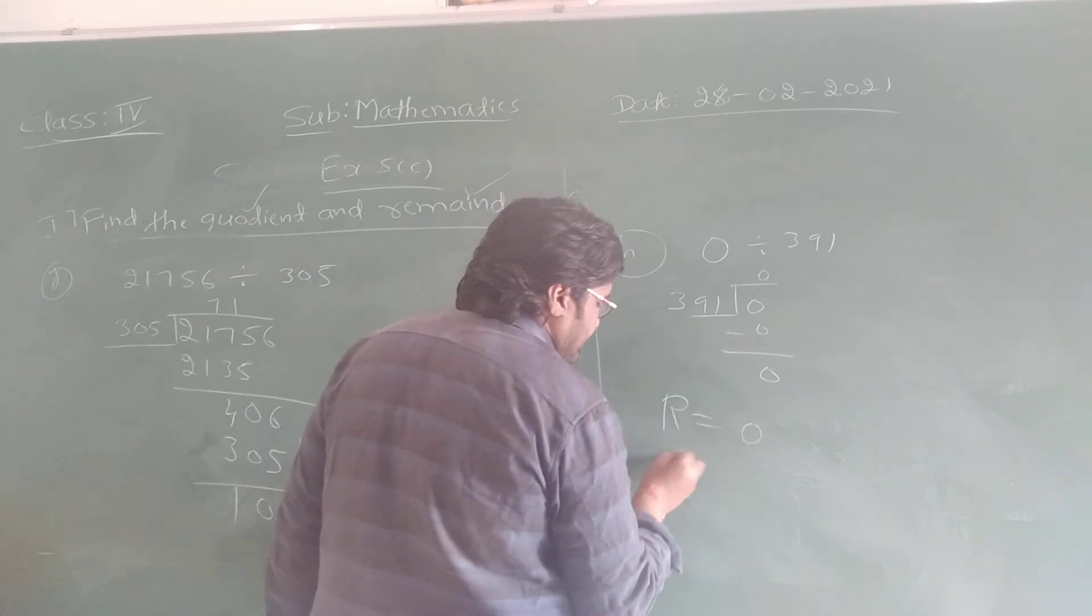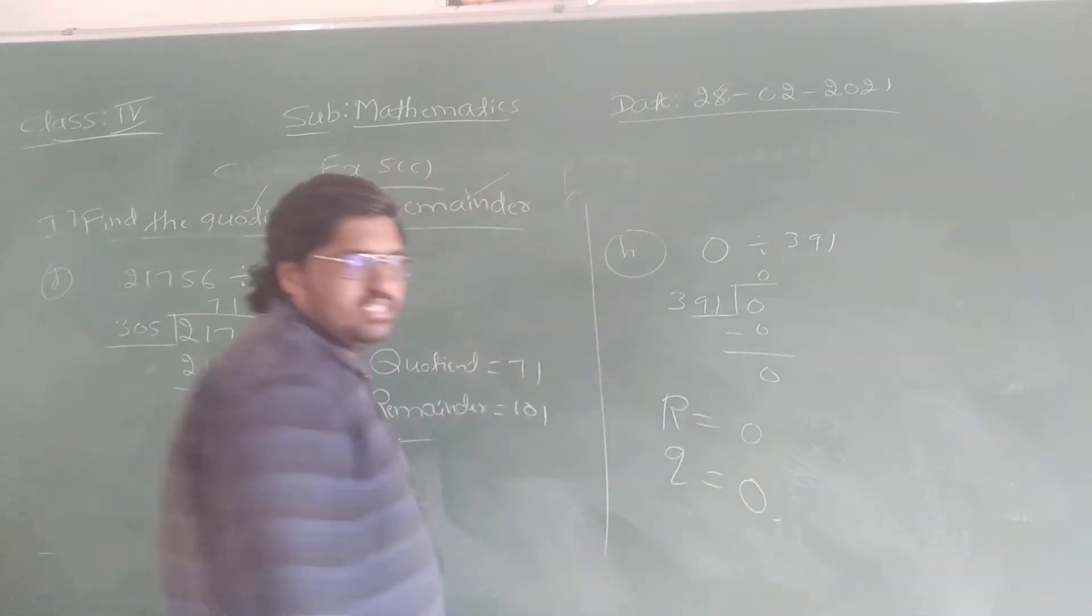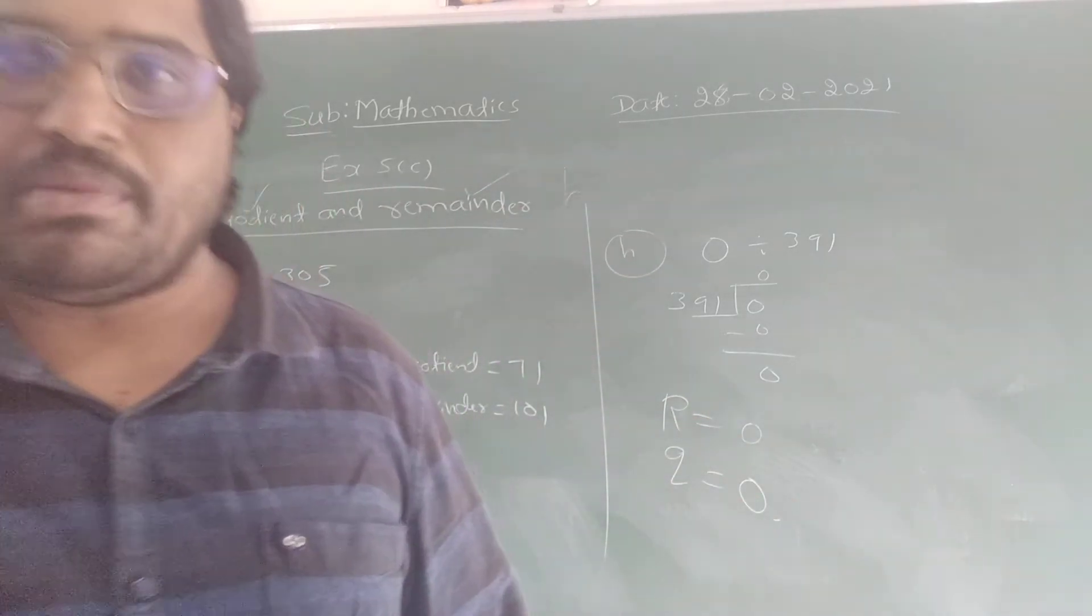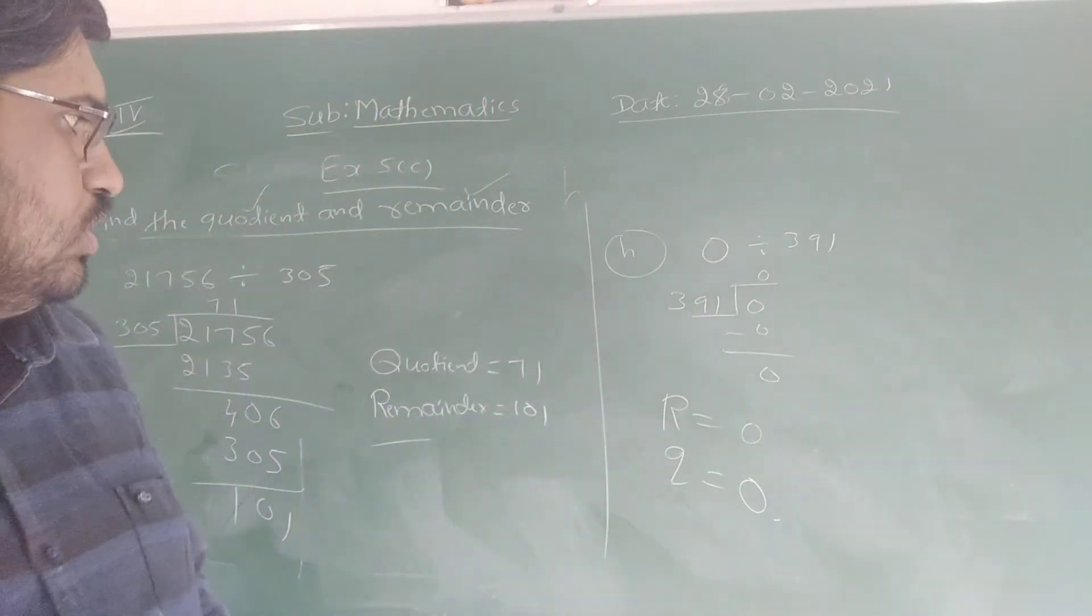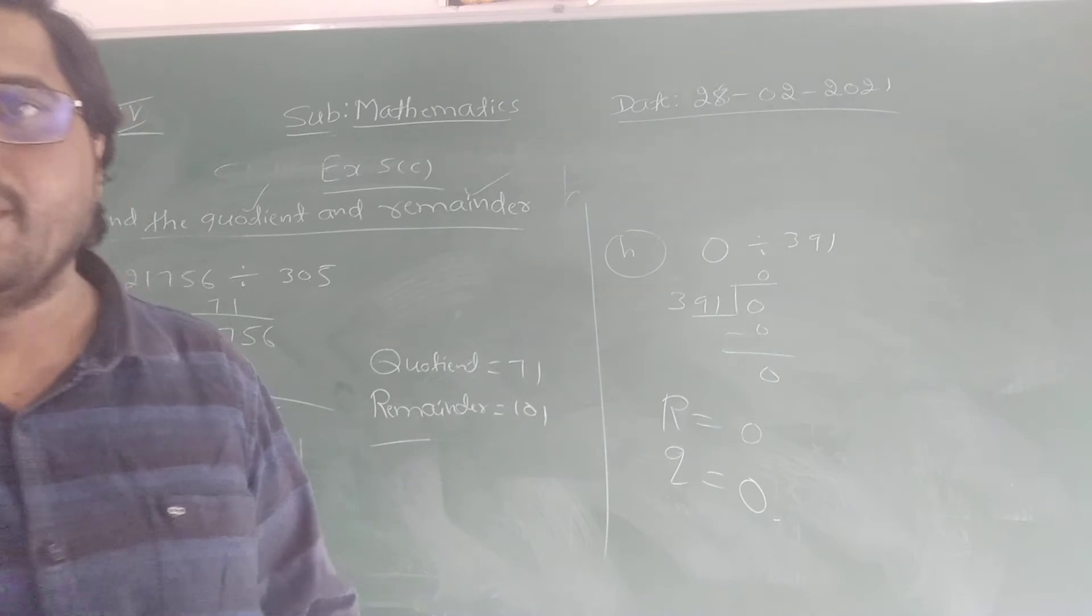So reminder is 0, quotient is 0. You have to keep in your mind. If 0 divided by any number is equal to 0 itself.